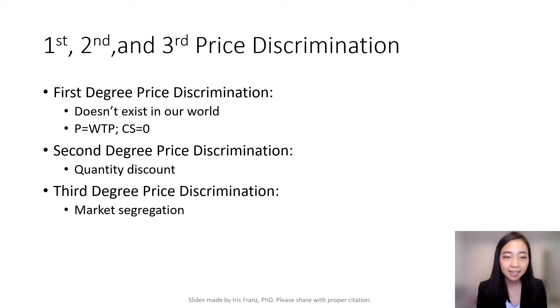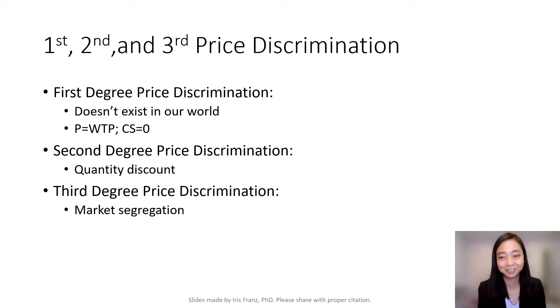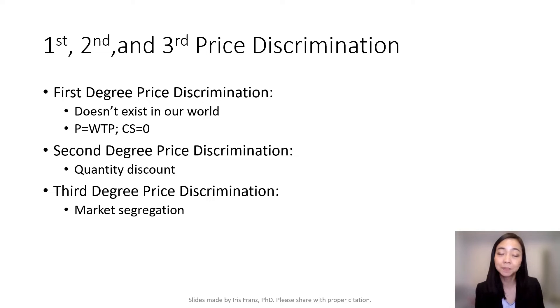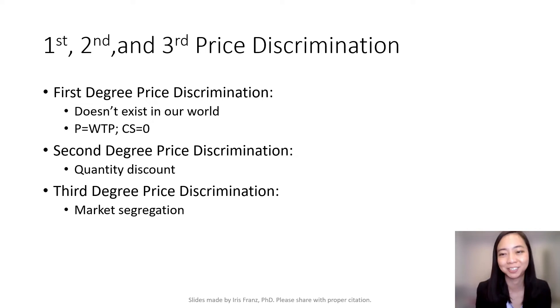The second degree price discrimination, in a nutshell, is quantity discount. For example, buy one, get one 50% off — that's a quantity discount, and that's the second degree price discrimination.